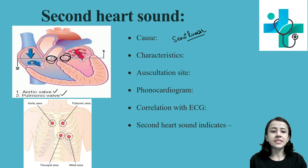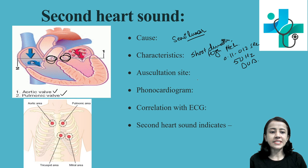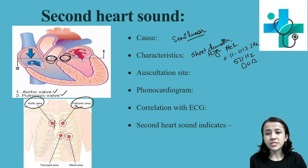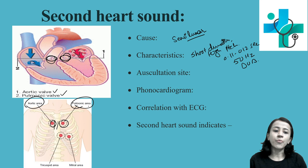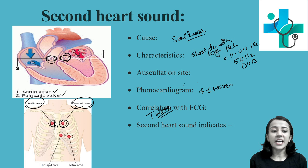The second heart sound has a short duration but high pitch. The duration is about 0.11 to 0.12 seconds and the frequency is about 50 hertz, producing a 'dub' sound. The auscultation sites are the aortic area — right second intercostal space near the sternum — and the pulmonary area on the left side of the sternum in the second intercostal space. The phonocardiogram records a single group of 4 to 6 waves with the same amplitude, correlated with the T wave in the ECG. The second heart sound indicates the onset of diastole and proper closure of the semilunar valves.